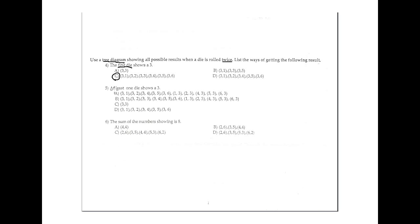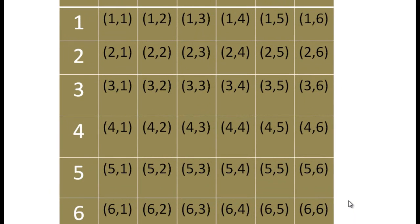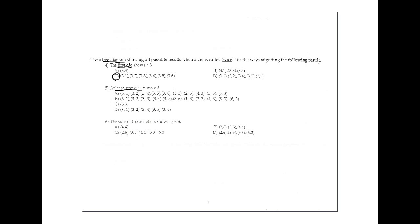Number 5: at least one die shows 3 — doesn't matter if it's in the first or second position. Using the same product table, the combinations with at least one 3 include: (3,1), (3,2), (3,3), (3,4), (3,5), (3,6), (1,3), (2,3), (4,3), (5,3), and (6,3). That gives us 11 combinations. The answer is option B.